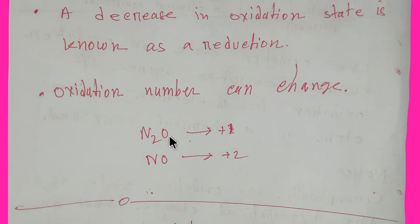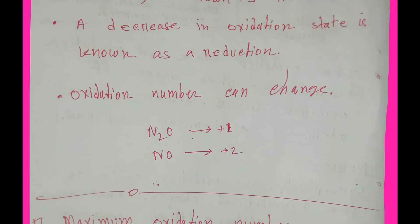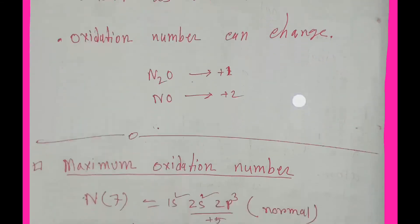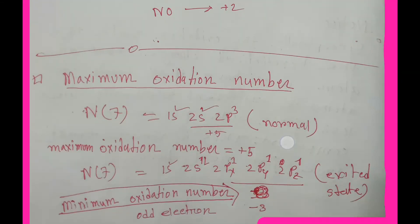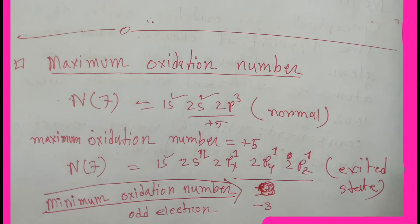For example, in nitrous oxide the oxidation state of nitrogen is plus one, while in nitric oxide the oxidation state of nitrogen is different. So oxidation number or state can change.